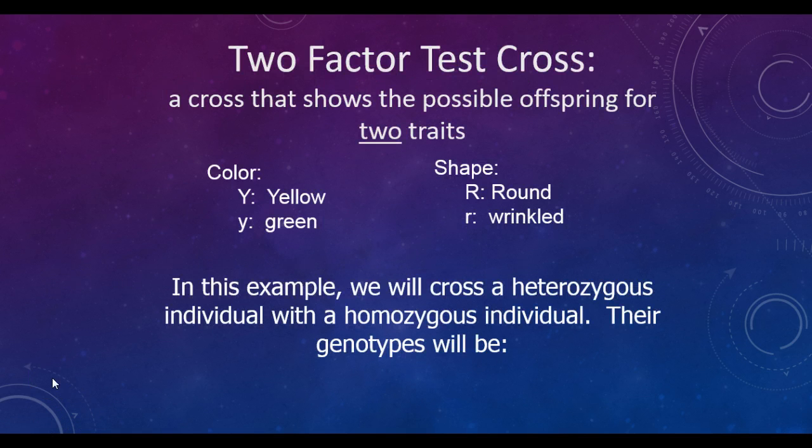A two-factor test cross is a cross that shows the possible offspring for two traits. In this case, we have color and shape. More specifically, the two variations of color that we have, our two alleles for color, are yellow and green. Two alleles for shape are round and wrinkled. We will cross a heterozygous individual with a homozygous individual.